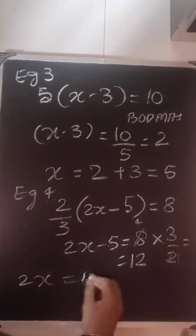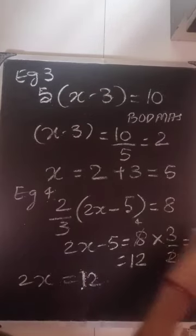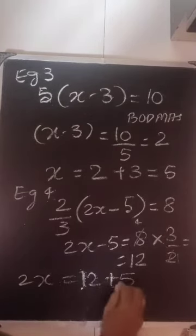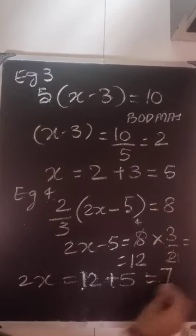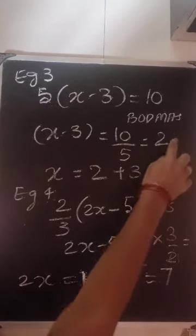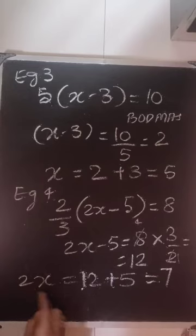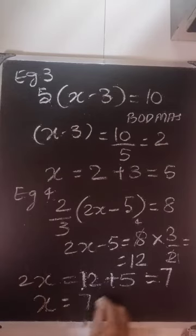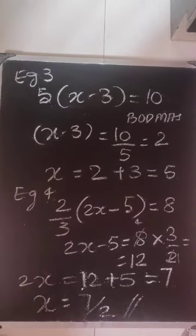So 2x is equal to 12 and then this 5 goes to that side. So it becomes plus 5 which is equal to 7 because subtraction will come before multiplication. So again lastly with respect to x it is 7 divided by 2. So x is nothing but 7 by 2.